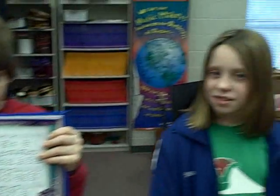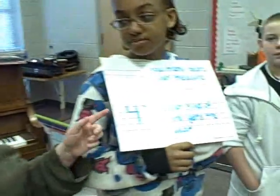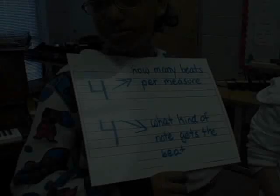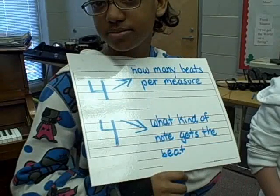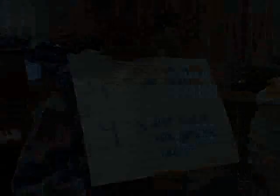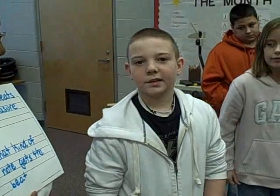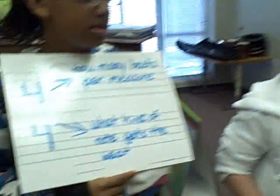A time signature tells you how many and what kind of notes there are. For example, the time signature 4-4. The top number tells you how many beats per measure, and the bottom number tells you what kind of note gets a beat.